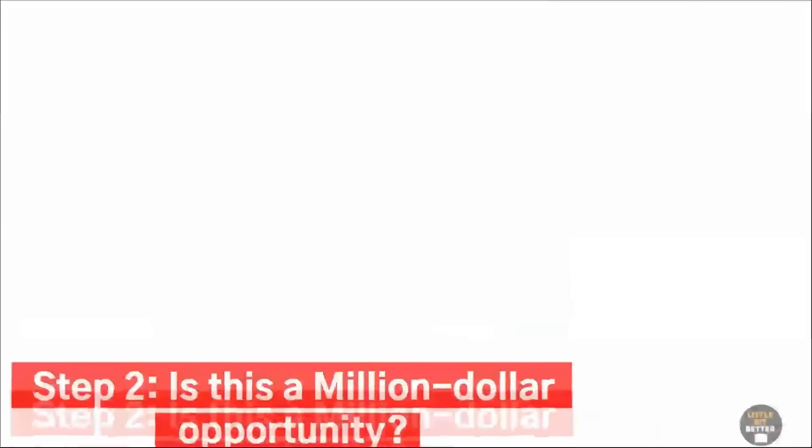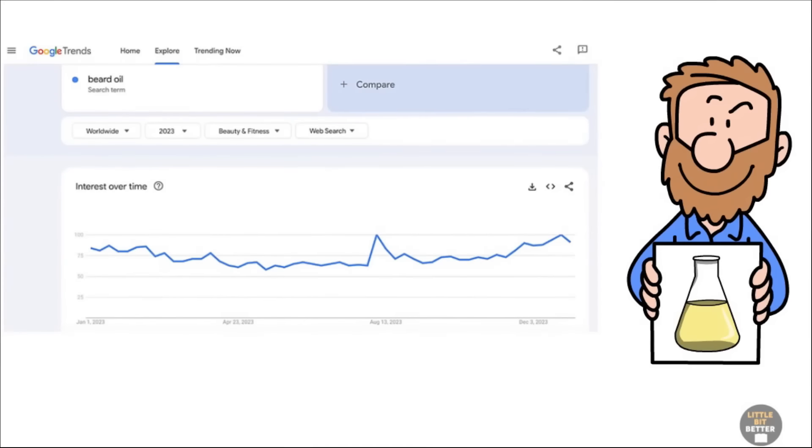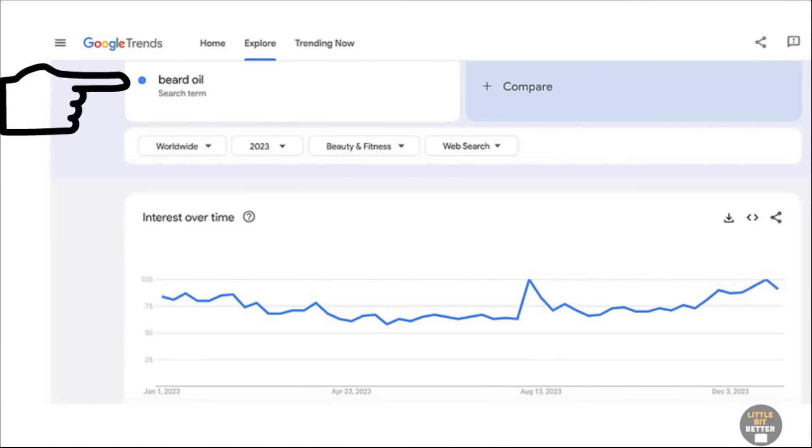For example, let's say we want to sell beard oil for men. First, we check Google Trends and see that the search term for beard oil has been growing. This tells us that the market is growing.